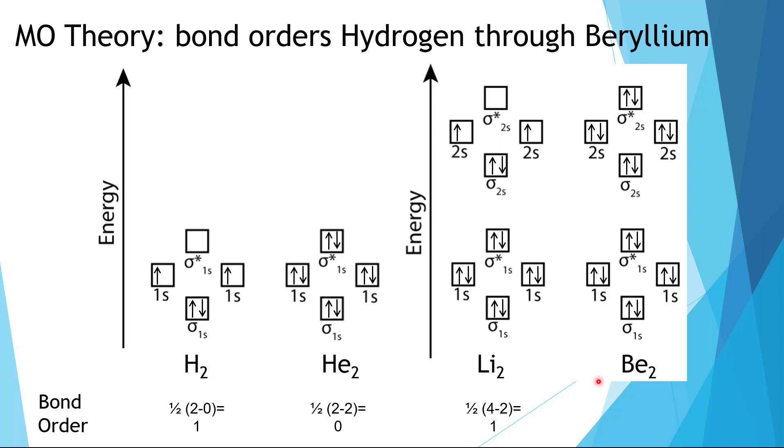For beryllium, we'll have four in the bonding and four in the antibonding, which gives us four minus four divided by two equals zero.